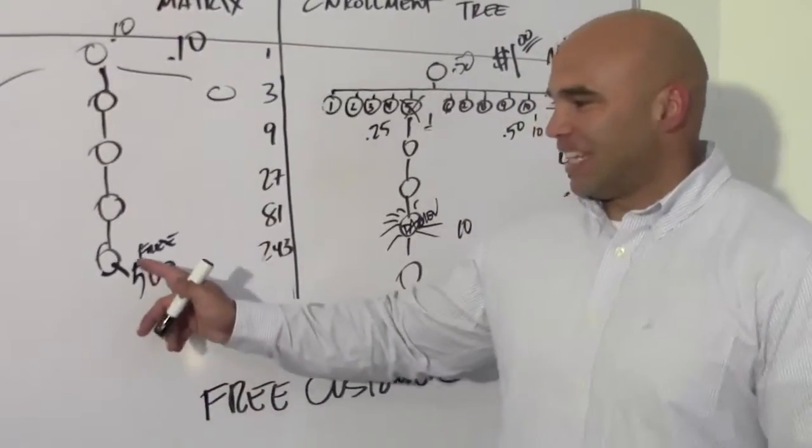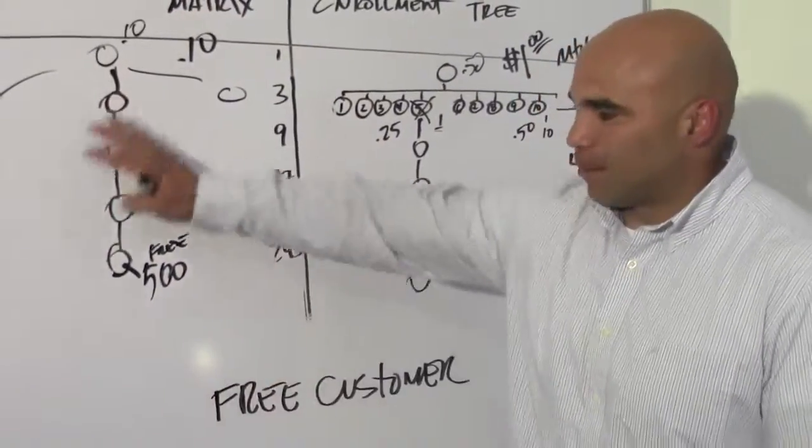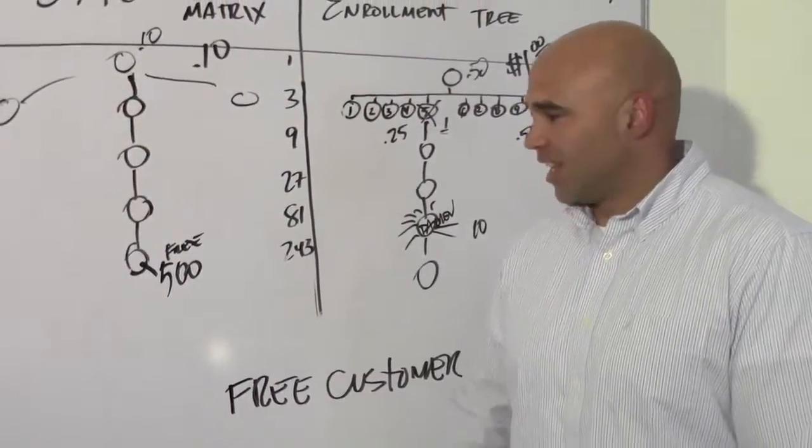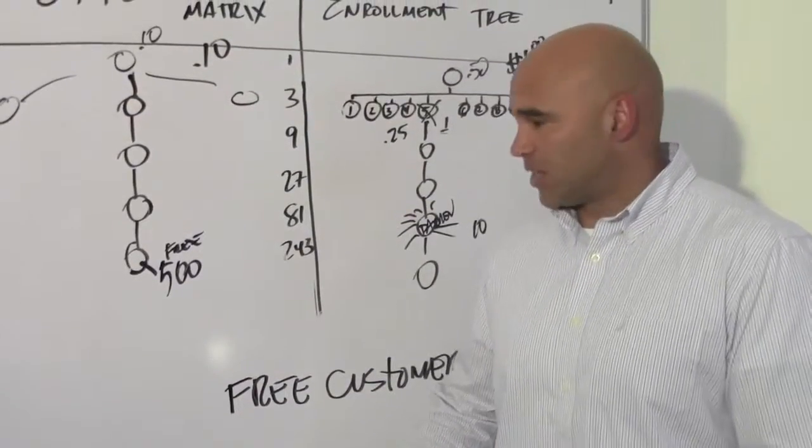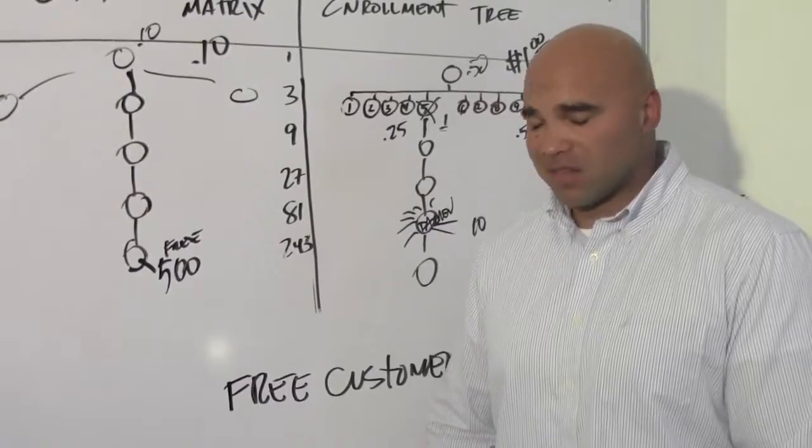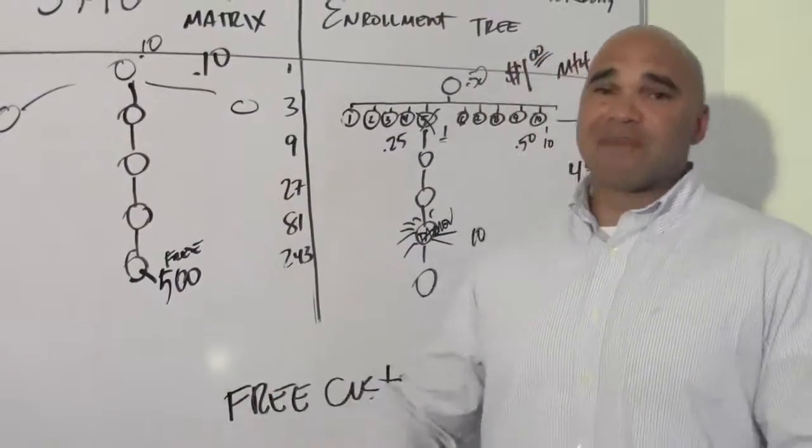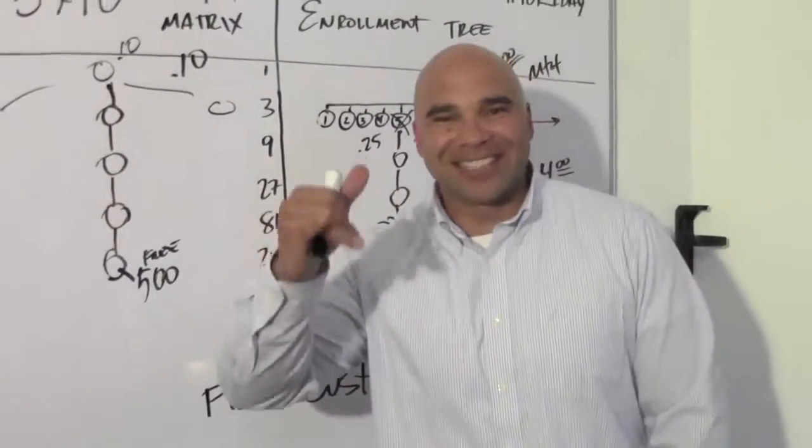But understand, you got 88,000 people in your 3 by 10 matrix, and what if they actually have 100, 200, 300 free customers also? That's where things get ridiculous. I don't even want to talk about the numbers. You think about it. Have a good night sleeping.